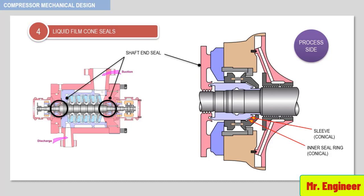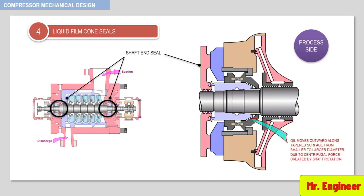When centrifugal force due to shaft rotation acts on the oil, the oil is forced to move outward along the sleeve and inner seal ring from the smaller to larger diameter. Thus, the amount of oil which contacts the process gas and gets contaminated is minimized.